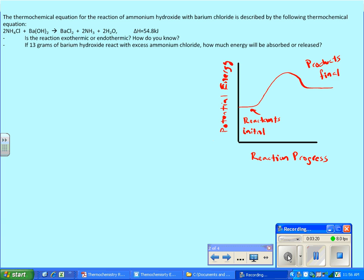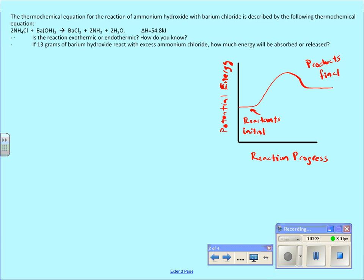All right, let's look at the second problem. The thermochemical equation for the reaction of ammonium hydroxide and barium chloride is described by the following thermochemical equation. So here we have our reactants, ammonium chloride and barium hydroxide. And they undergo a chemical reaction which creates barium chloride, ammonia gas, and water. I did this one in class, if you remember. This is where I was able to mix these things in a beaker on a wet piece of paper or cardboard, and it froze to the paper. So this is an endothermic reaction. And how do we know it's endothermic? One of the clues is that delta H is a positive value in that case.